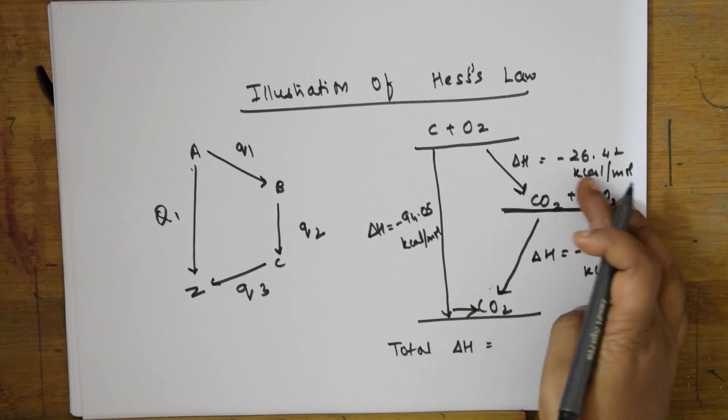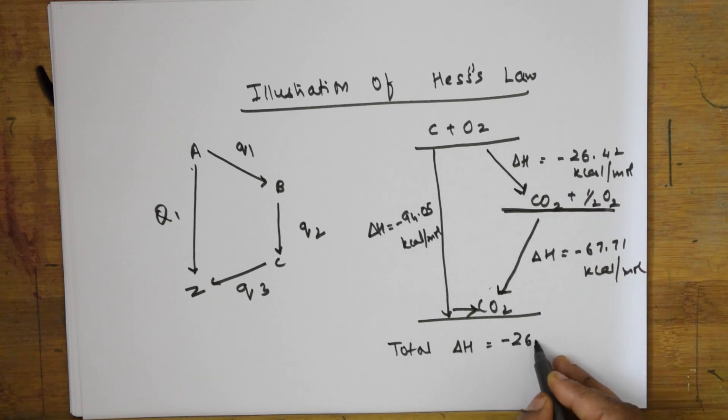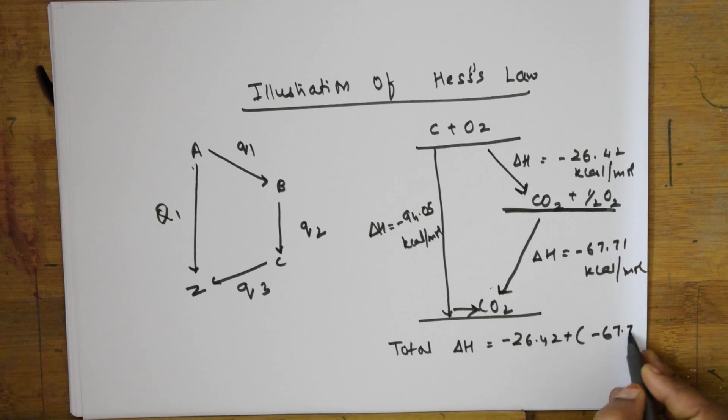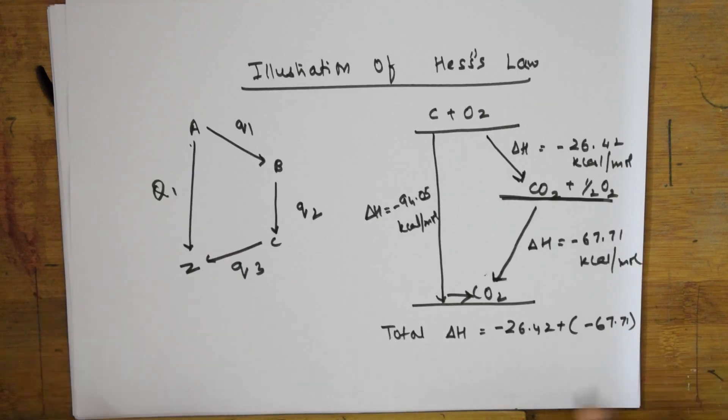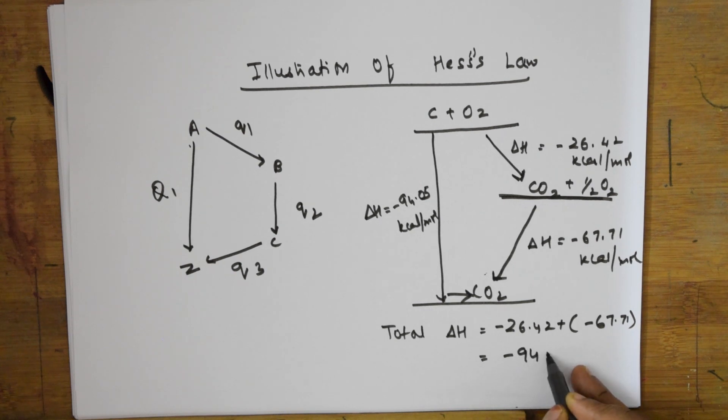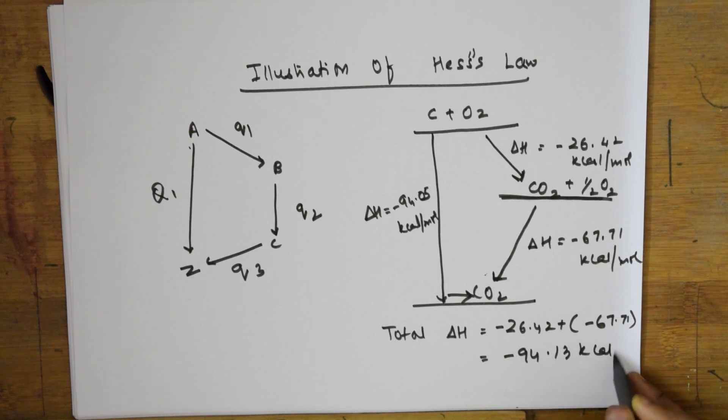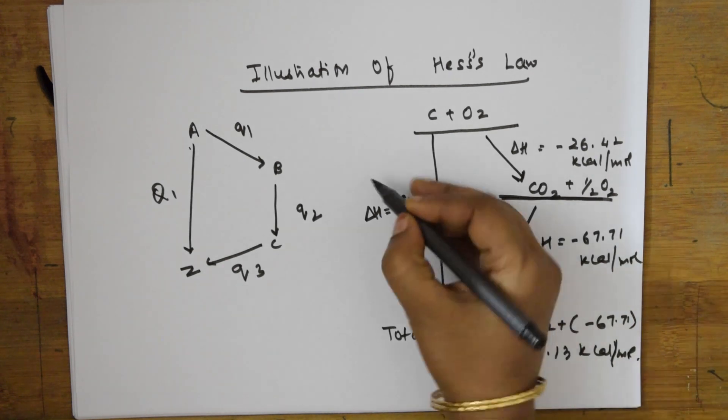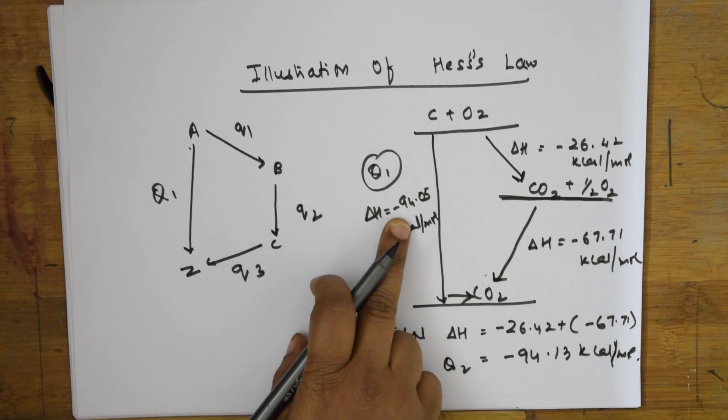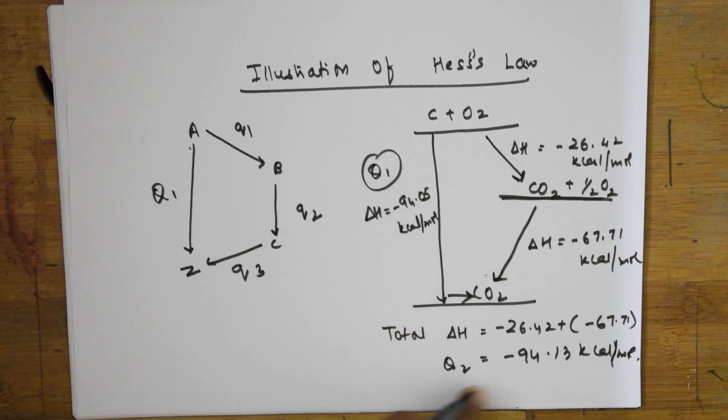When I add, I get an answer of minus 94.13 kilocalories per mole. Observe carefully, this is Q2. The direct value is Q1. Q1 value is minus 94.05, Q2 is minus 94.13. Almost both are similar.